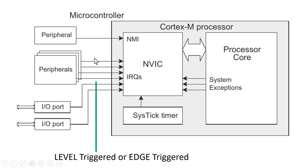Similarly is the case with falling edge triggered interrupt. In that case, the usual level on the interrupt line will be logic 1. When the peripheral wants to interrupt the processor, it will make this level logic 0 for some time, and after that time it will make the logic 1 again on the line. It will not wait for the processor whether it has served the interrupt or not.